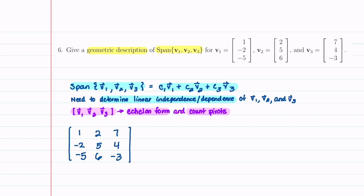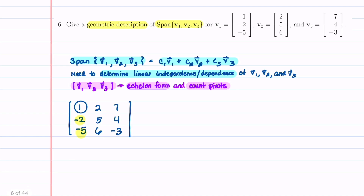We need to put it in echelon form, so I'm going to start by circling our pivots. That's our first pivot, and we need to get a 0 below those pivots. We're going to take row 2 and replace it with row 2 plus 2 times row 1, and then take row 3 and replace it with row 3 plus 5 times row 1.